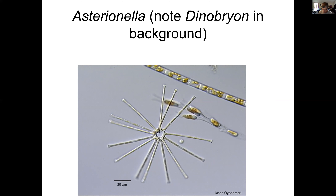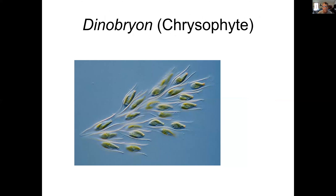There's also Dinobryon, which is not a diatom — it's a chrysophyte. This is really common late in summer in lakes because these big agglomerations of cells are able to swim up and down to get into the light or into nutrients as needed. They're also big enough to be resistant to being eaten by zooplankton.